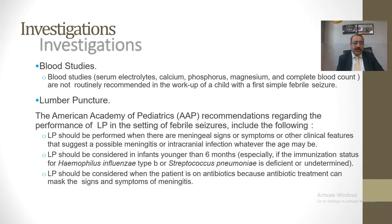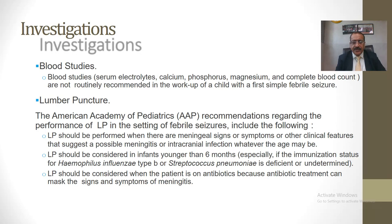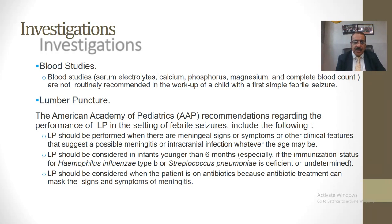The most important investigations are as follows. Number one is blood studies. A complete blood count should be done — if the WBC count is raised and there is a greater percentage of neutrophils, that will indicate CNS infection or other bacterial infection, and the focus of infection must be sought. Similarly, a metabolic profile should be done including serum electrolytes, serum calcium, phosphorus, and magnesium.